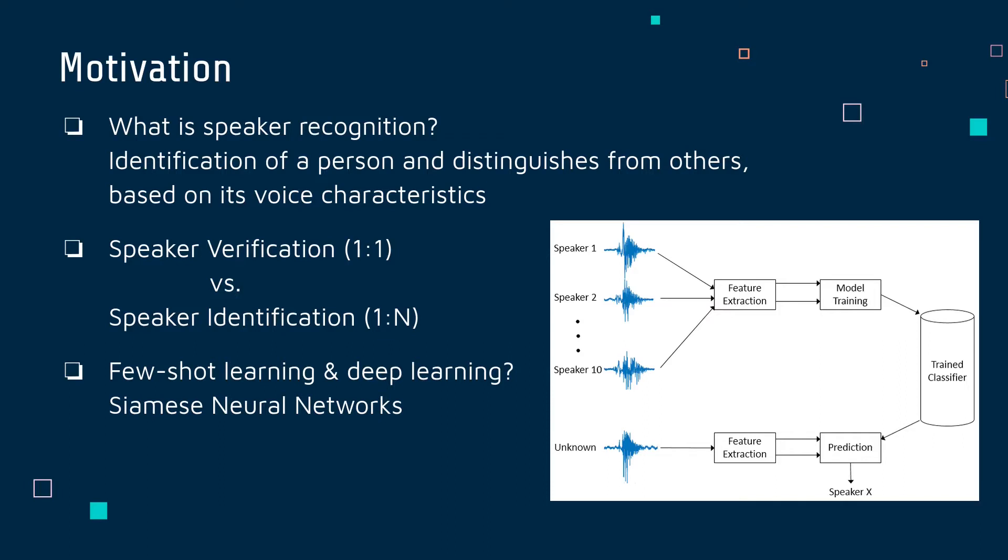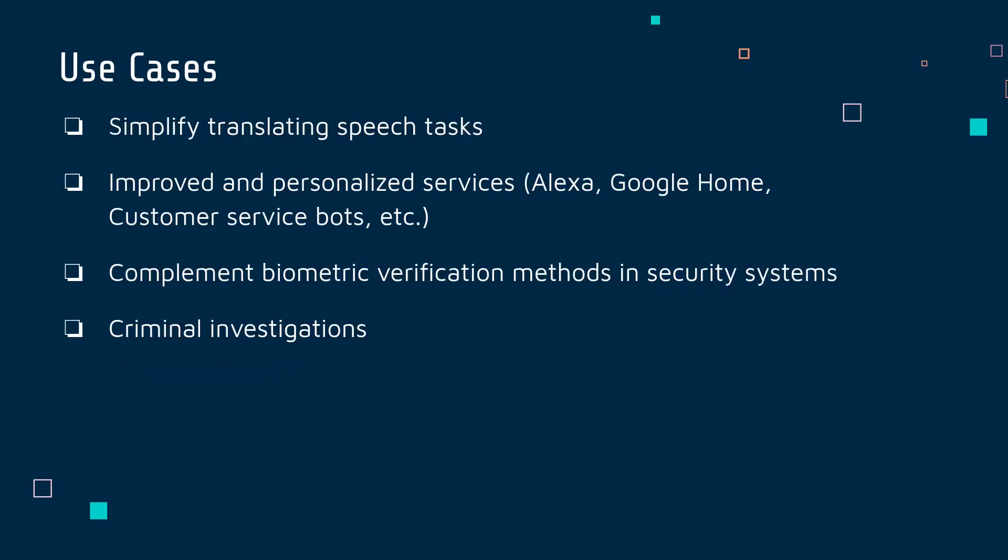In addition, we are going to pose this problem from a very trendy field of study in deep learning, that is, few-shot learning, which aims to learn useful information from just one or few samples. In this case, with a single three-second audio of unknown identity. One of the most successful architectures in this field is Siamese neural networks. The possible use cases of this technology are to simplify translating speech tasks, improve services such as Alexa, Google Home or customer service bots, complement biometric security systems or help in criminal investigations.